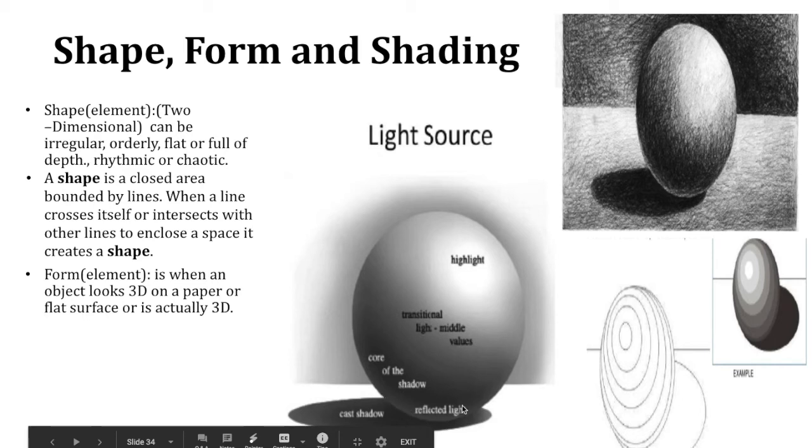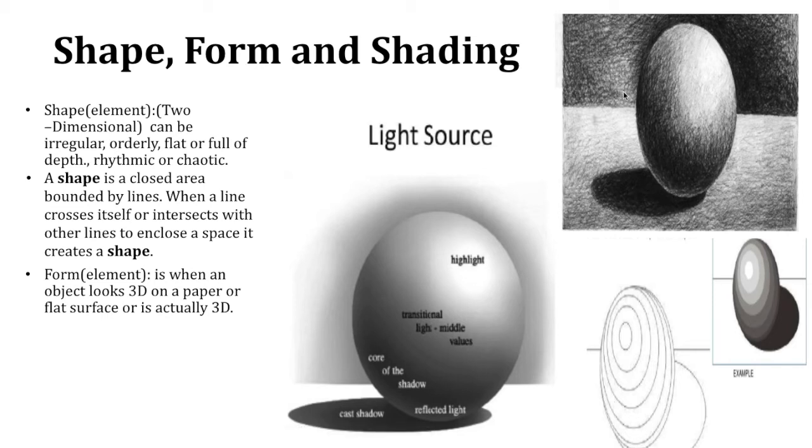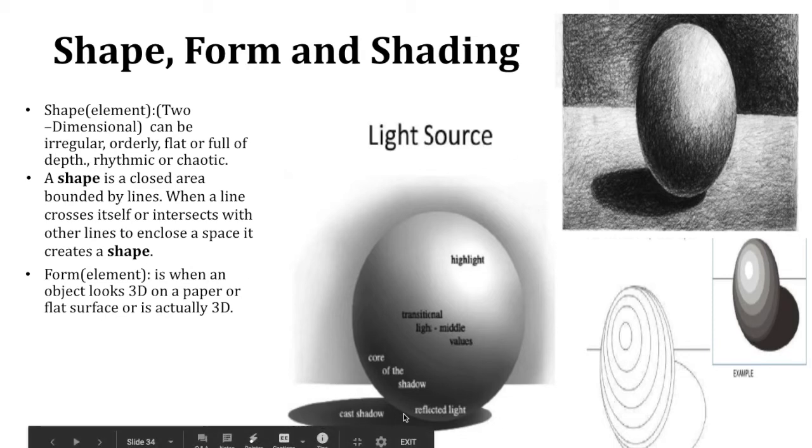You see it in all these reflected light there, reflected light here. Everything's got a little bit of reflected light. Otherwise, if you couldn't tell the difference between a shadow and the bottom of the item, the object, it wouldn't look 3D. And then your cast shadow is going to be quite dark too.